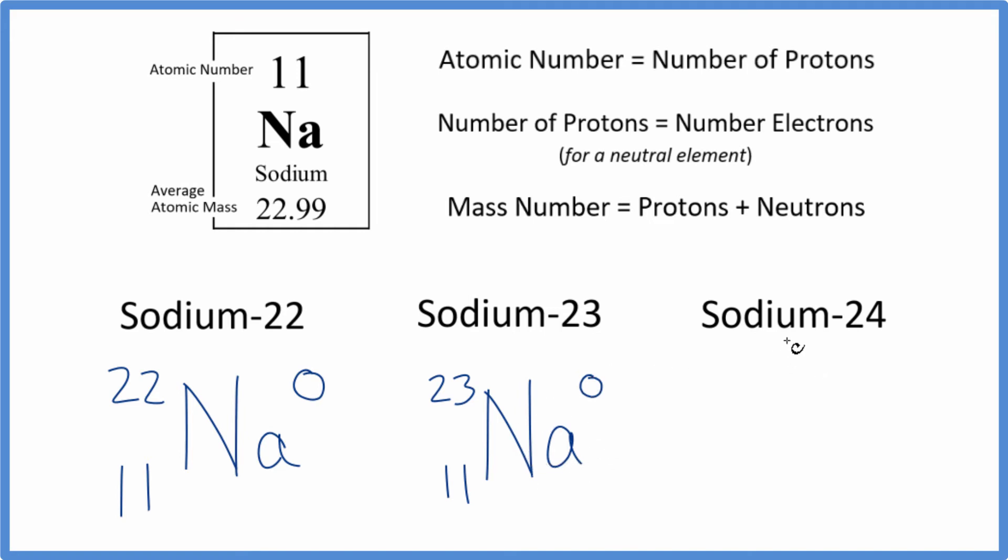Pause and write the isotope notation, the nuclear notation here, for sodium 24. Again, for sodium 24, we write the element symbol. We know the mass number here from the hyphen notation. Sodium's always 11, and there's no charge, so we could write a zero up here.